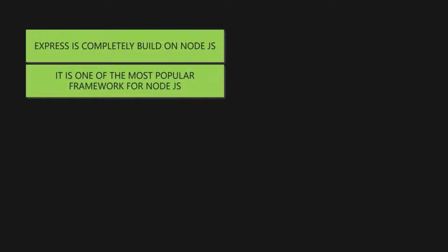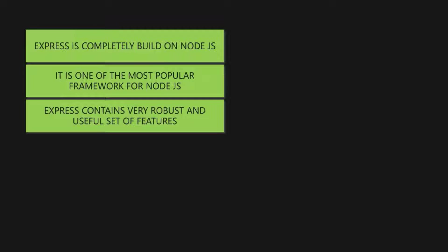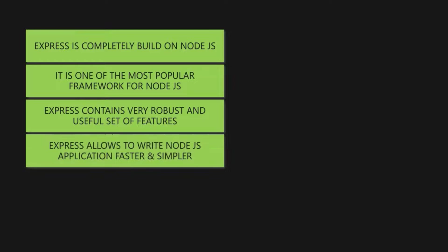Express contains a very robust and useful set of features. Things like complex routing, easier handling of requests and responses, adding middleware, server-side rendering, and many more things are all included out of the box with Express. Express allows us to write Node.js applications faster and simpler by providing developers a predefined method for almost every complex task in Node.js.